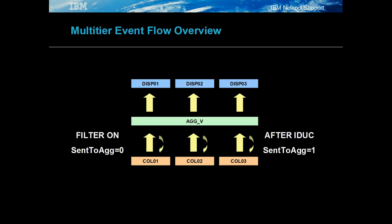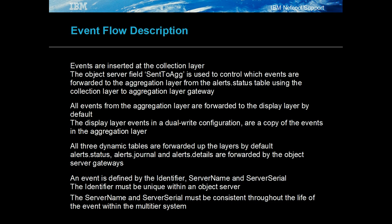The event flow in a multi-tier object server is from the collection layer to the display layer through the aggregation layer. Events are only sent to the aggregation layer when the sent_to_ag field is set to zero. After the collection to aggregation gateway has processed the events, sent_to_ag is set to one. Usually events flow freely to the display layer. Events flow through unidirectional gateways between layers, and at the aggregation layer through a bidirectional gateway between the two aggregation object servers.